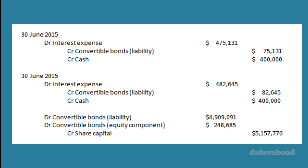We come down to 2016 and they convert at the end of the year, so there is the cost of the interest — and we're assuming the payment of the coupon has happened before they convert. Interest is 482 thousand from the table, cash is 400 thousand, and the difference of 82,645 is the change to the liability balance. That's a similar process to what you're used to, and we'll use a similar process when we look at financial leases next week.